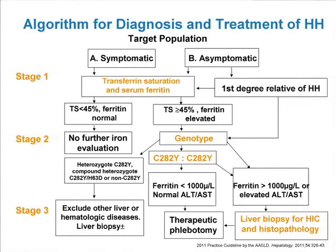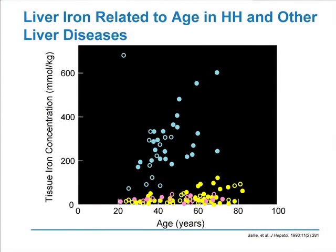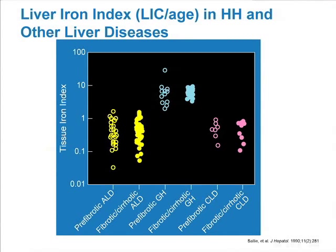Returning to the algorithm: is liver biopsy mandatory? In our view, it is mandatory in individuals with a very high serum ferritin as a prognostic indicator of whether fibrosis or cirrhosis is present. You can proceed to therapeutic phlebotomy with the safety valve of a ferritin below 1,000 in the face of normal liver enzymes. This explains why, on Richard Sally's data, individuals mostly over the age of 40 have higher tissue iron concentrations, and many have already developed cirrhosis or fibrosis.